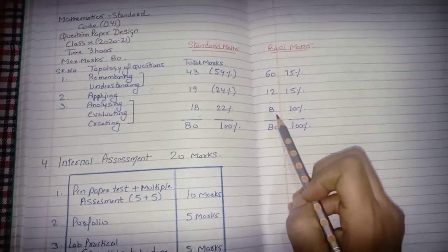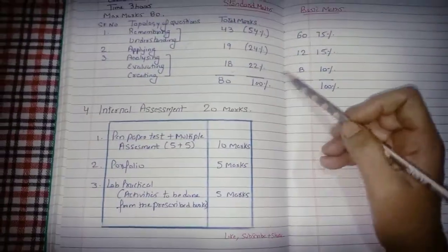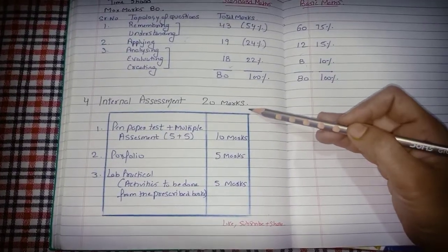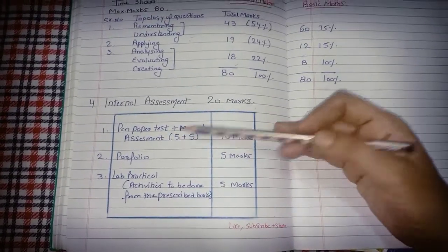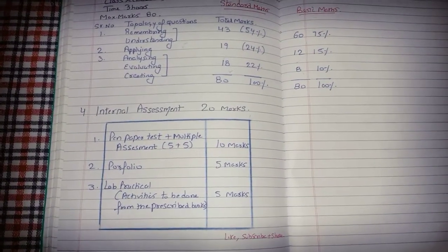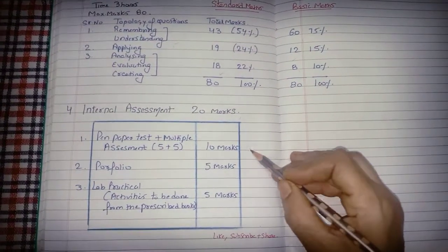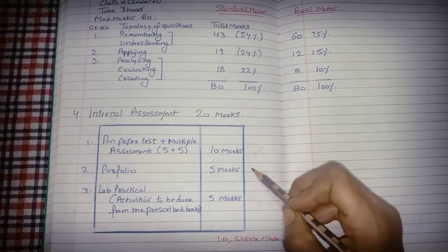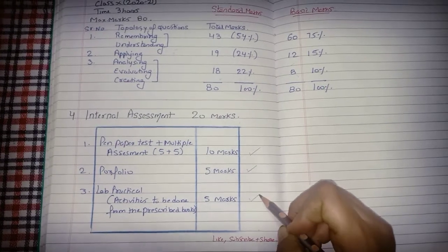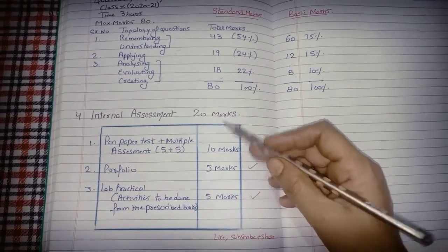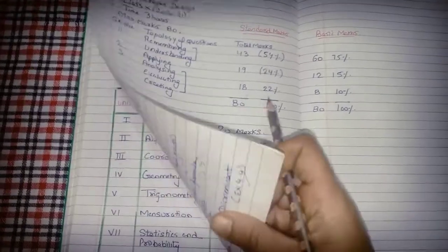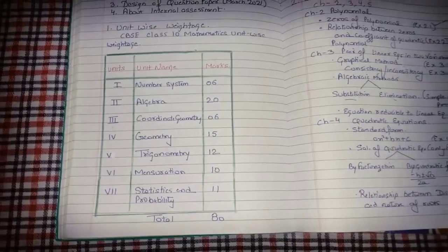For internal assessment, you have 20 marks total. Periodic tests and assignments done in class account for 10 marks. Your portfolio is 5 marks. Lab practical activities are 5 marks. So internal assessment is 20 marks structured this way, and the board exam is 80 marks.